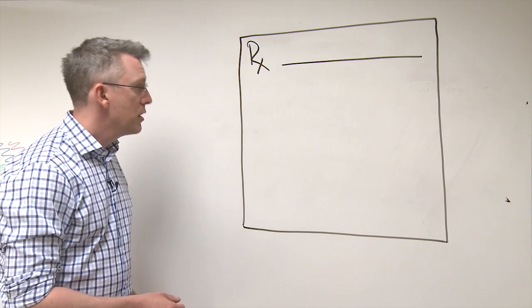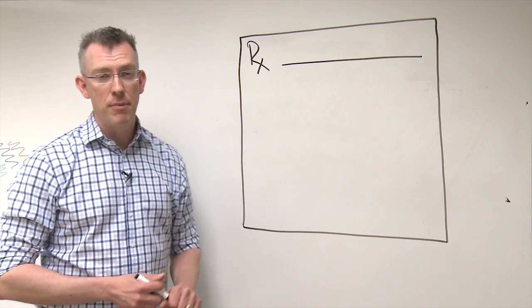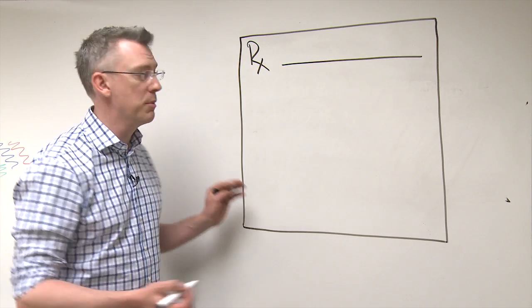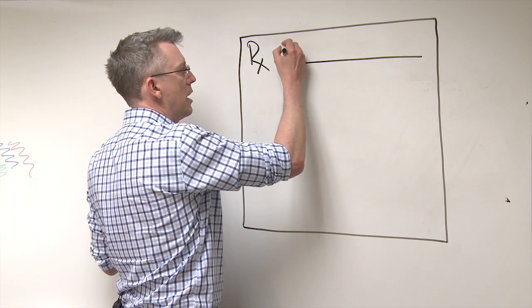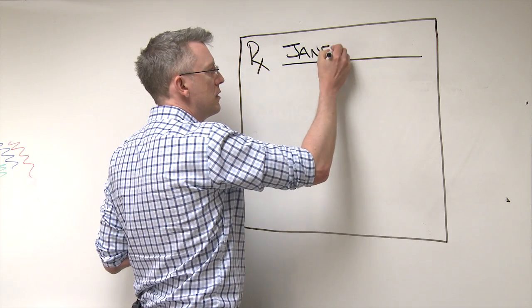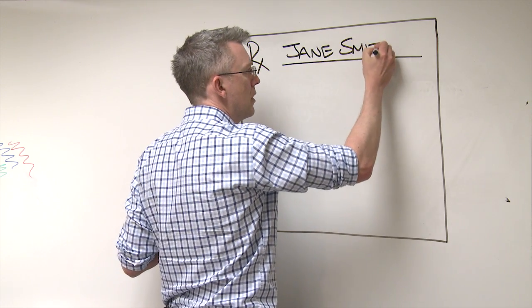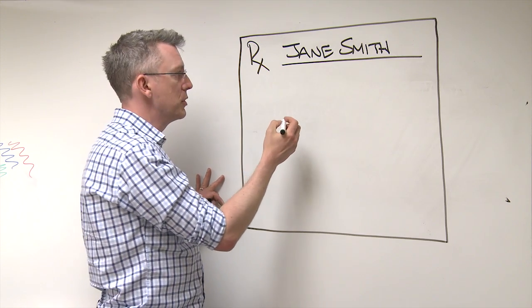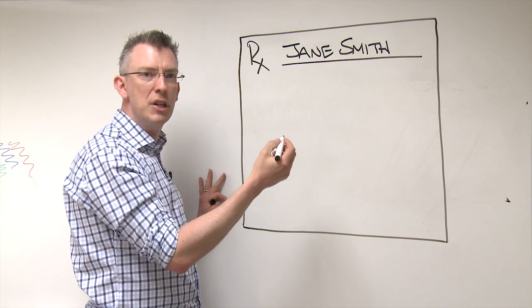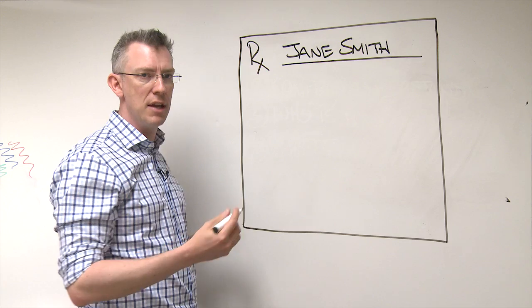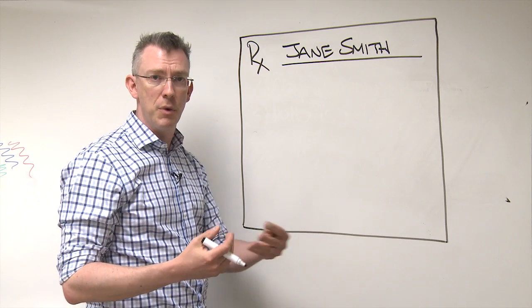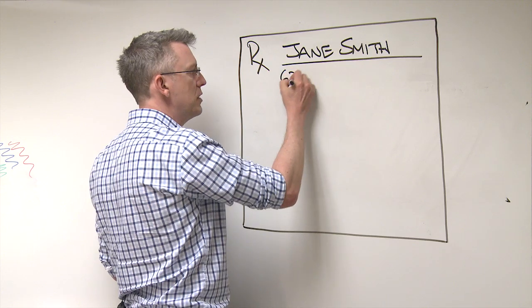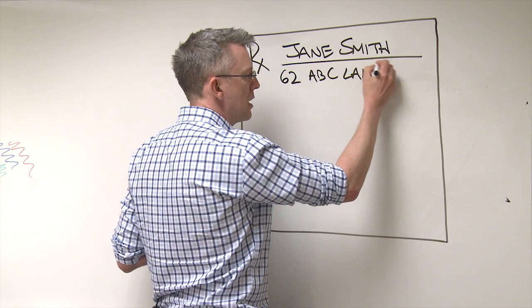First, you make sure you've got the patient's name properly written so that the pharmacist or whoever is filling the prescription will be able to read it. So Jane Smith. And then there's often a line for the address, and that's actually probably good to write as well. It just helps decrease confusion, decreases the chances that the prescription when it's filled by a pharmacy will end up in the wrong patient's file. So 62 ABC Lane.